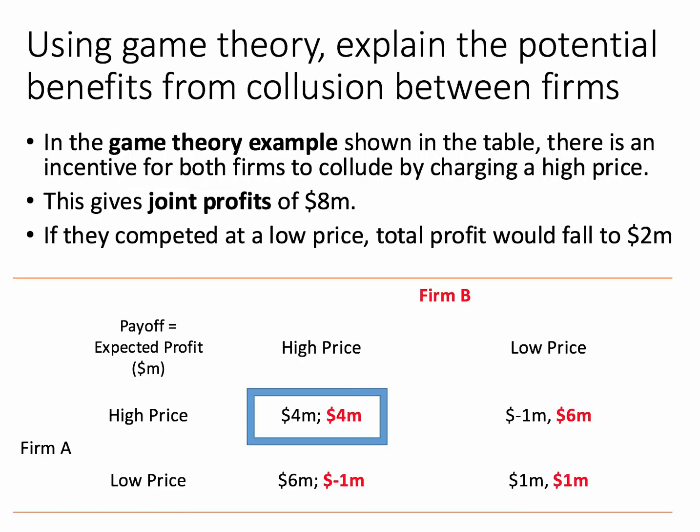Our second question: using game theory, explain the potential benefits from collusion between firms. Well, one of the simplest ways is to use a payoff matrix. In the table below, the payoff is the expected profits in millions of dollars from charging either a high price or a low price in the two-player, two-choice game.